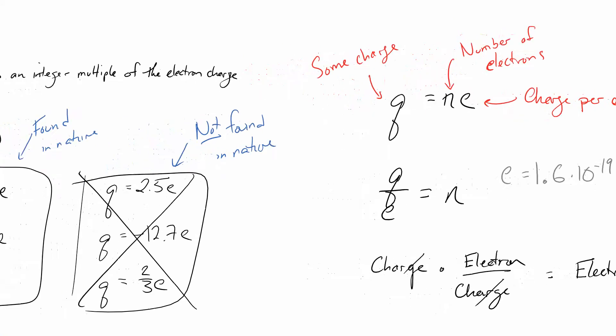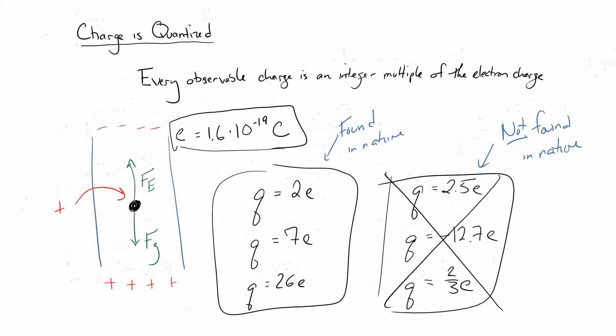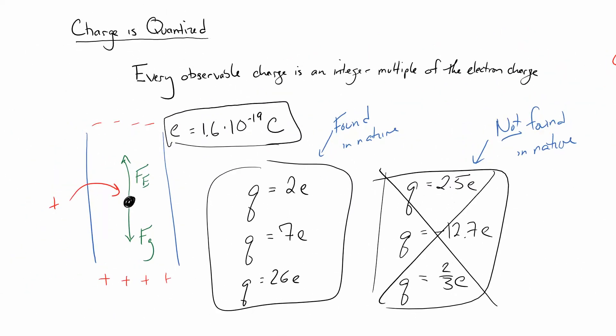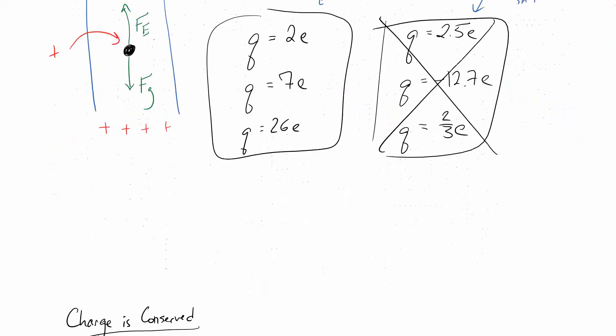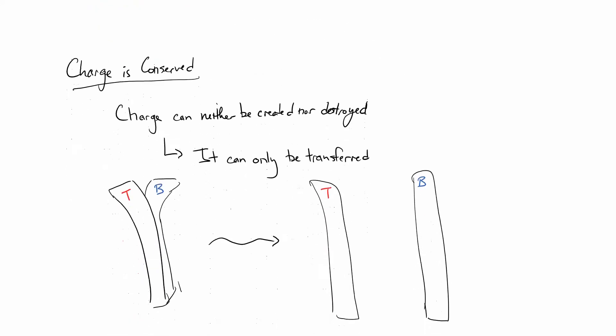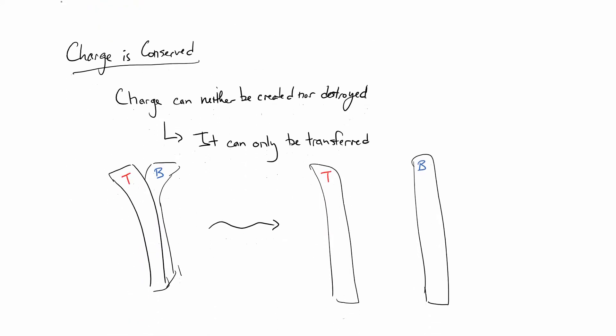This is a fundamentally important idea, and it helps us model what happens — because now we can think of everything involving charges as the motion of electrons, and that's going to be useful. Now, one other idea we want to deal with is this idea of conservation of charge: much like energy, charge is conserved, so it can neither be created nor destroyed — it can only be transferred.